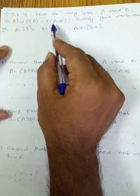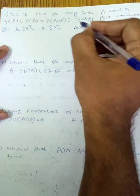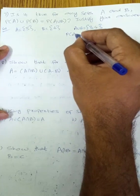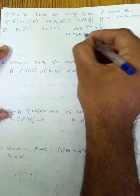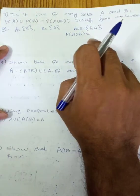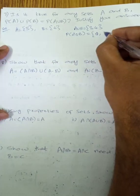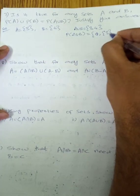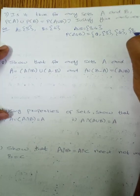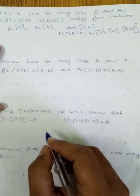First, P of A union B. P of A union B equals: empty set, {3}, {4}, {3,4}. This is P of A union B.